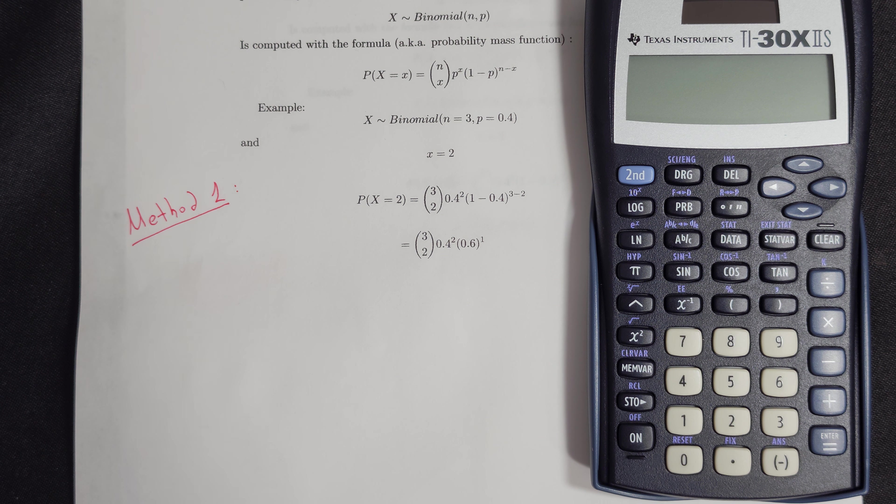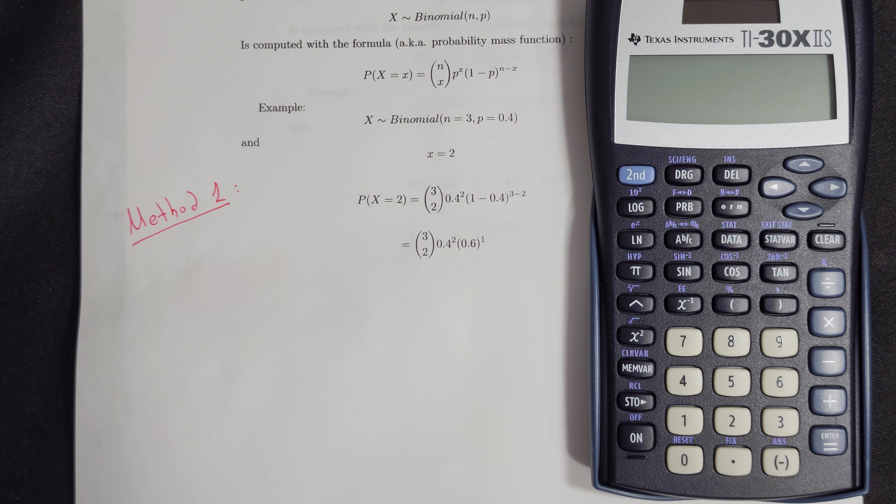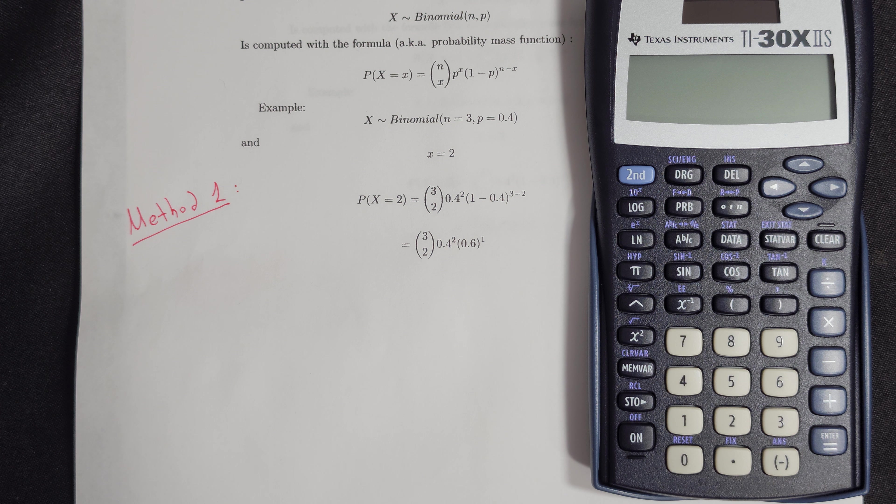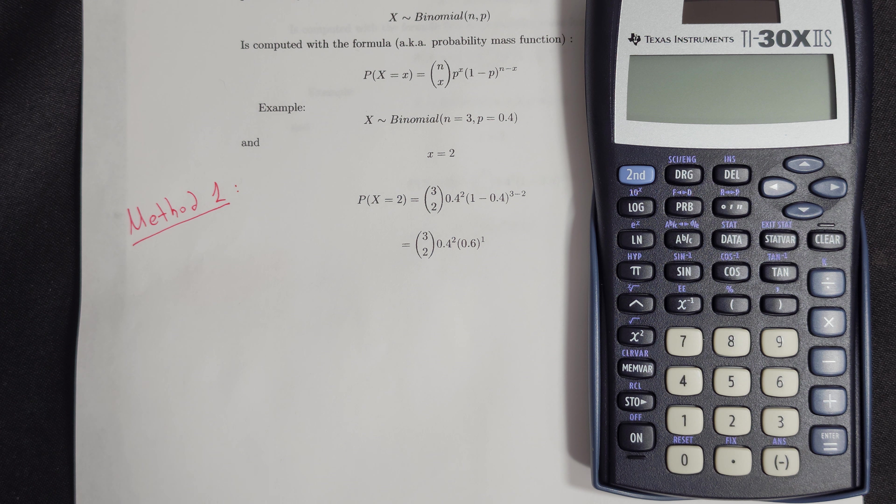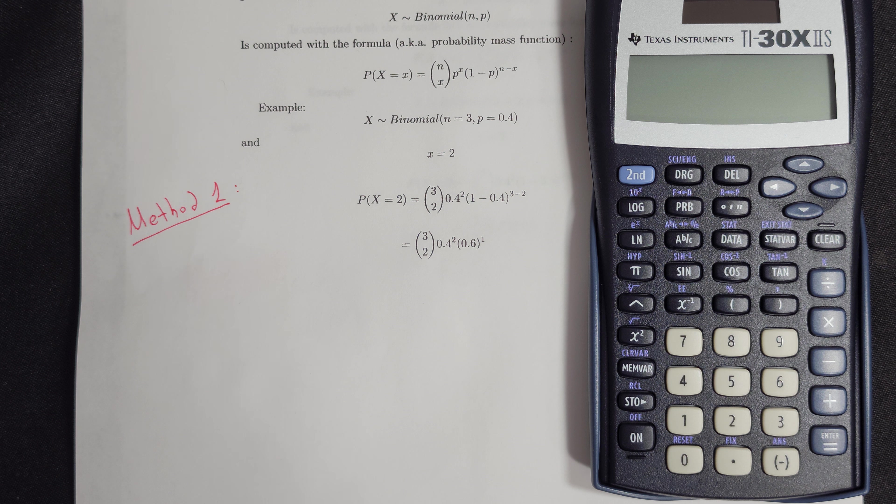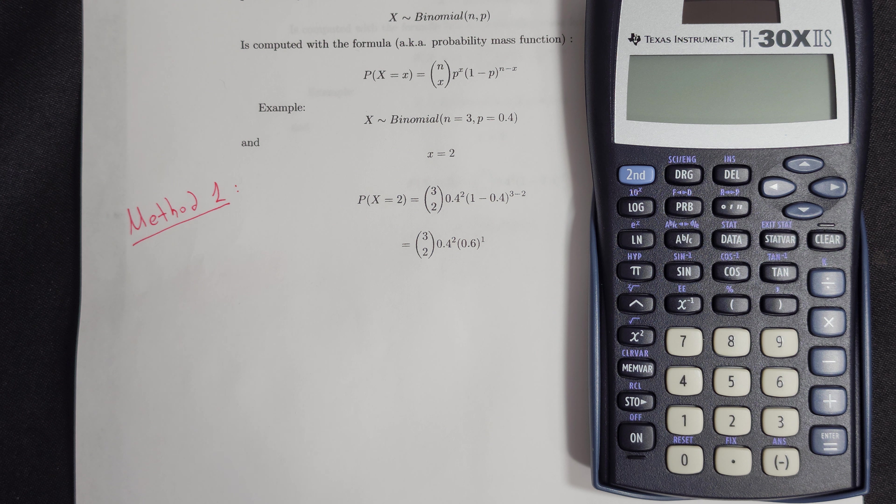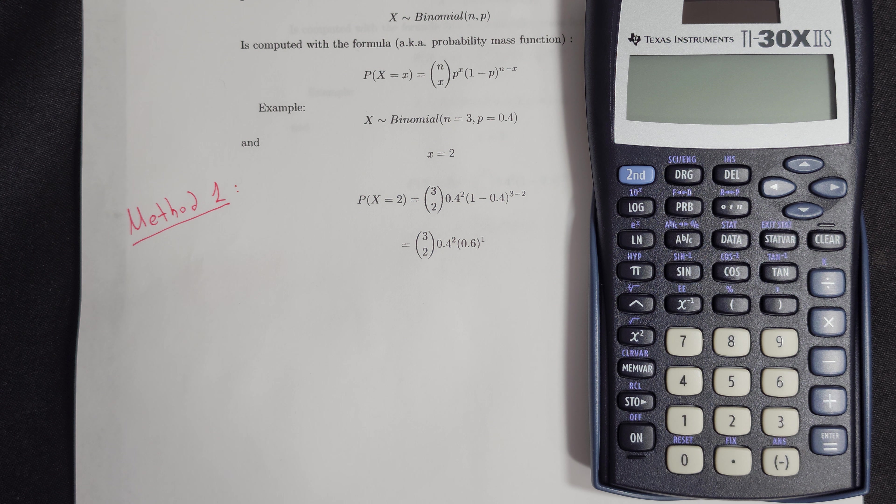We will use the TI-30X2S calculator to find the binomial probability where X, or the successes, are equal to 2, N, or the number of trials, are equal to 3, and the probability of single success is equal to 0.4.